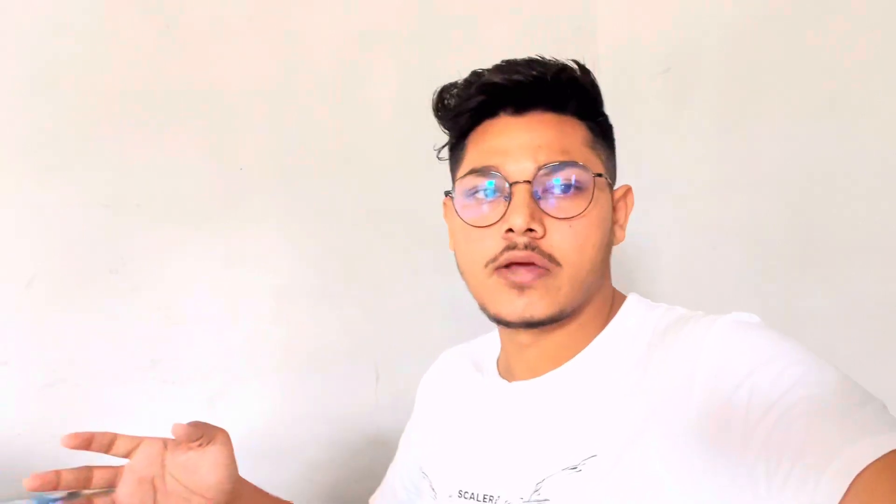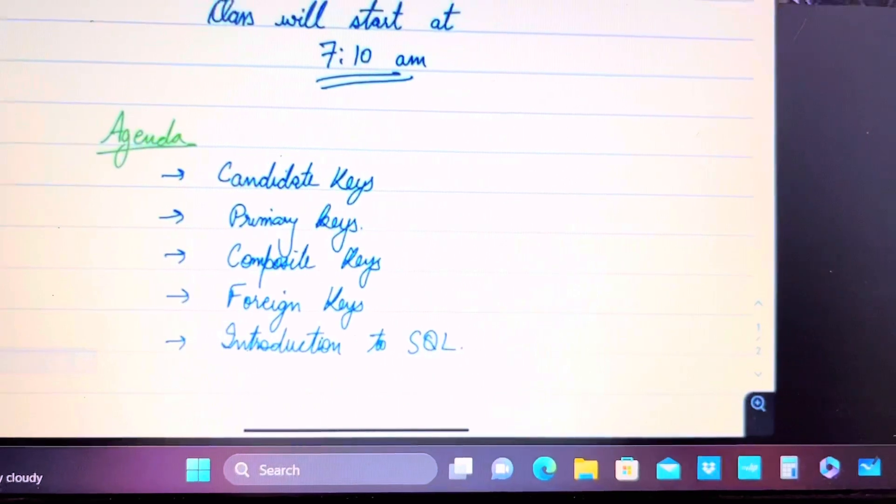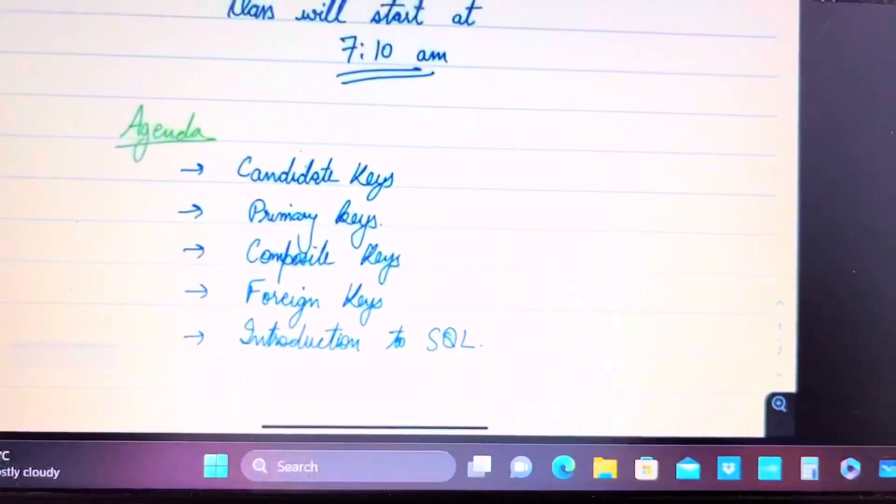Today's agenda: what are candidate keys, primary keys, composite keys, foreign keys, and introduction to SQL. These are the topics we're going to cover today—what all of these mean and various examples for them.